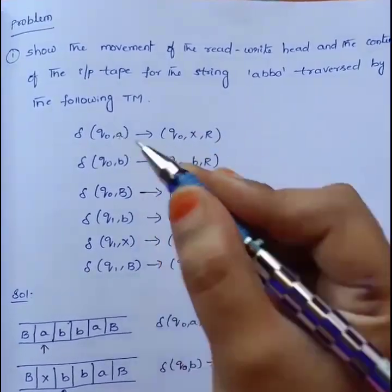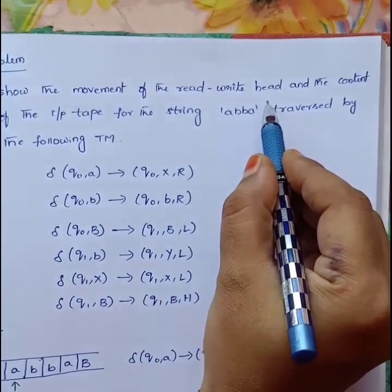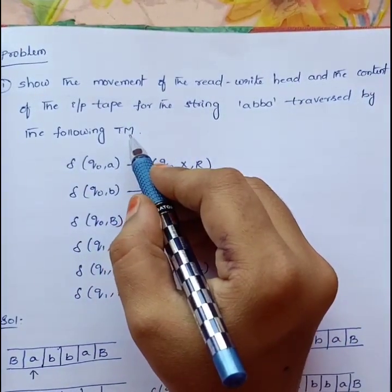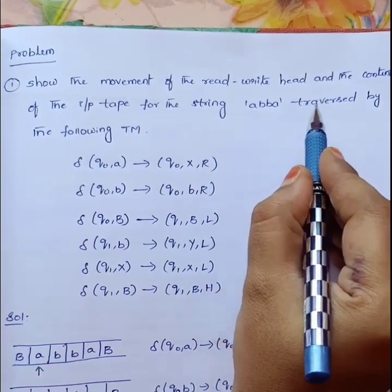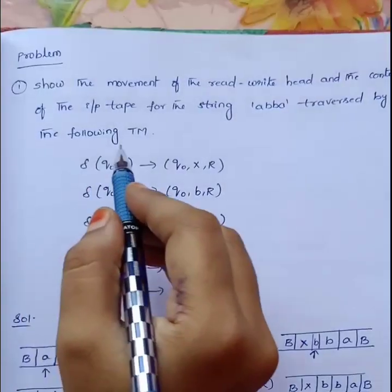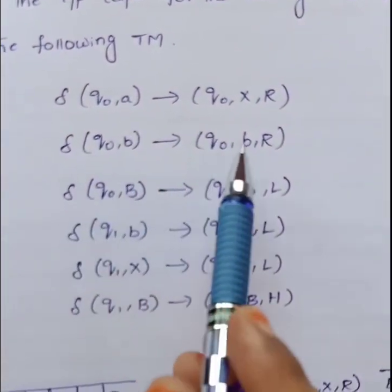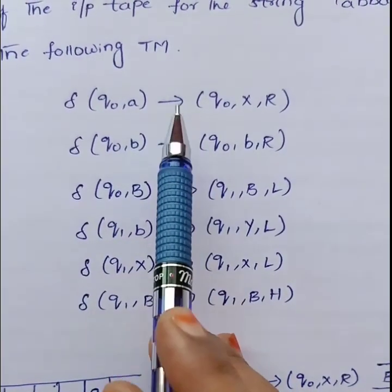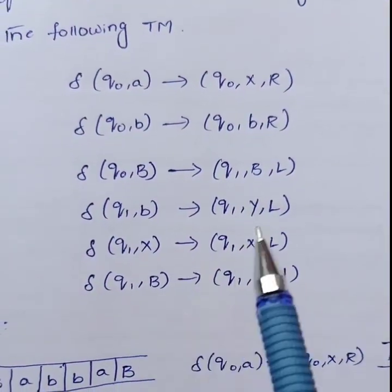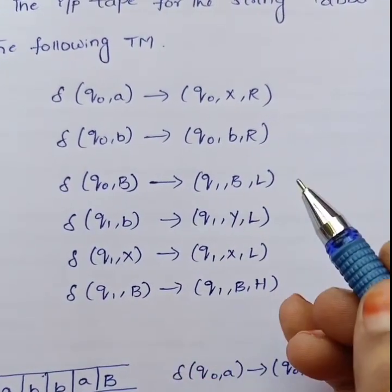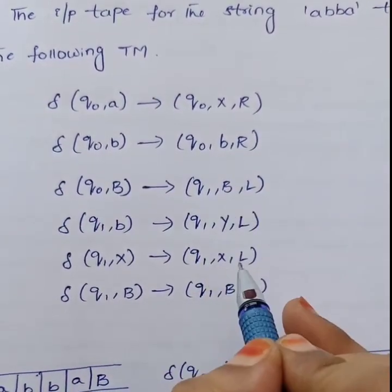See the problem here: show the movement of the read/write head and the content of the input tape for the string A, B, B, A traversed by the following Turing machine. The Turing machine is already given. These are all the transition functions of the Turing machine. Using this Turing machine I am going to traverse the string A, B, B, A according to these transitions.